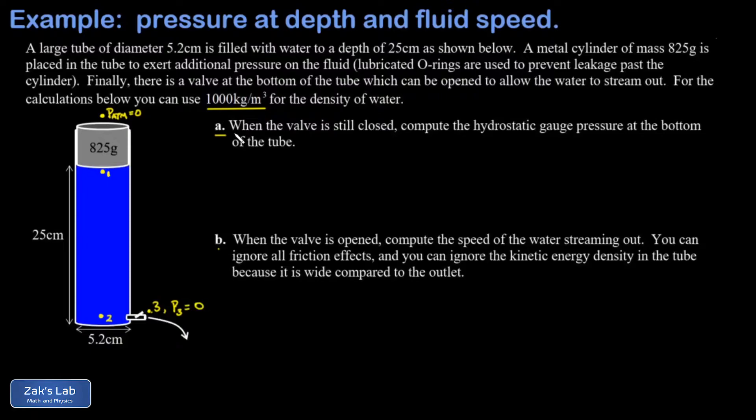We start working on part A. We want the hydrostatic pressure at point two at the bottom of the water column. First we need the pressure at point one, which is sufficient to balance that metal cylinder. This requires a force analysis. The force of gravity is pulling down with magnitude mg, and the pressure at point one is exerting a force upward, F1.